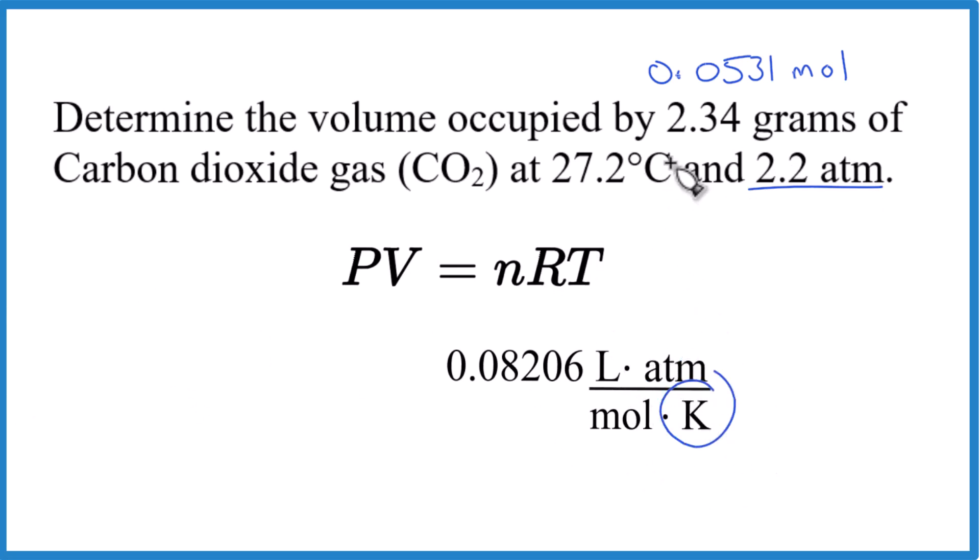I need to have degrees in Kelvin, so I'm going to add 273.15 to this. I'll end up with 300.35 Kelvin. We can also see our final volume will be in liters, so R tells us a lot. It fixes the units when we do all the math.